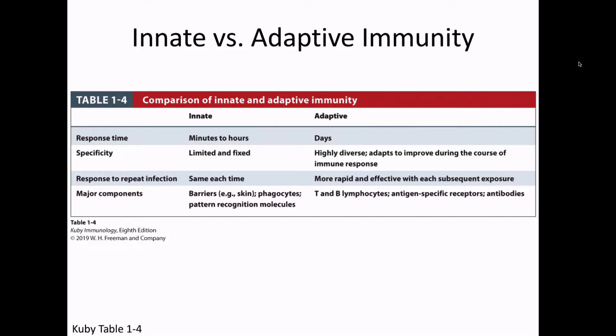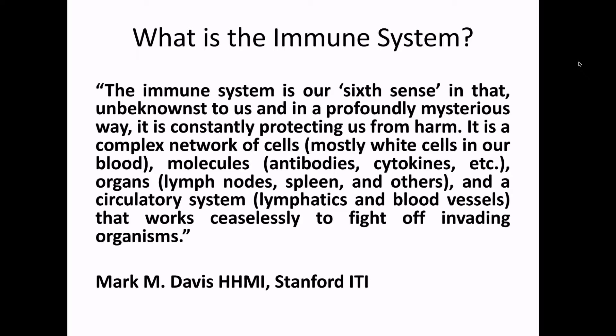The components of the innate and adaptive immune systems are different. The immune system is a network that includes cells, molecules, organs, and the circulatory system, all as different parts. So another way we can divide up the immune system is by asking what are the molecules, what are the cells, what are the organs, and dividing things among those types of categories.